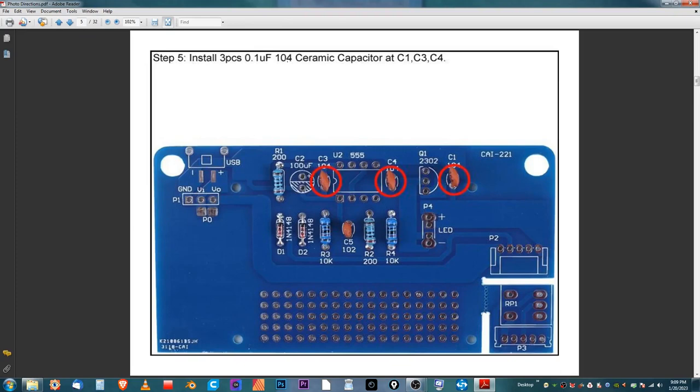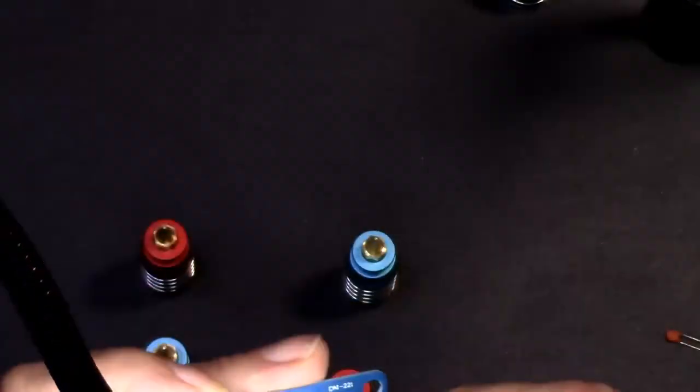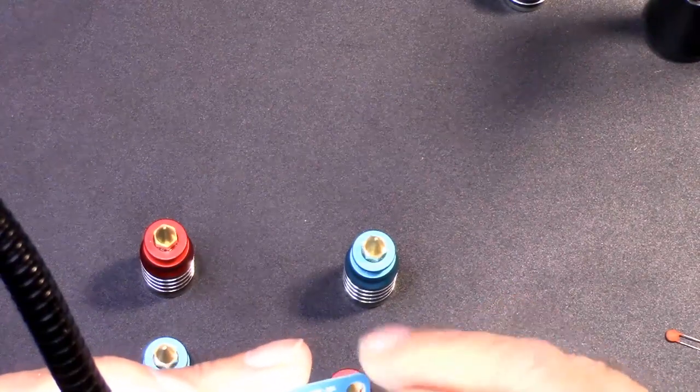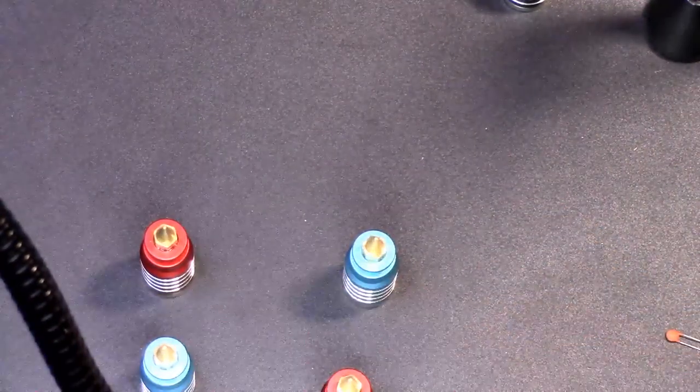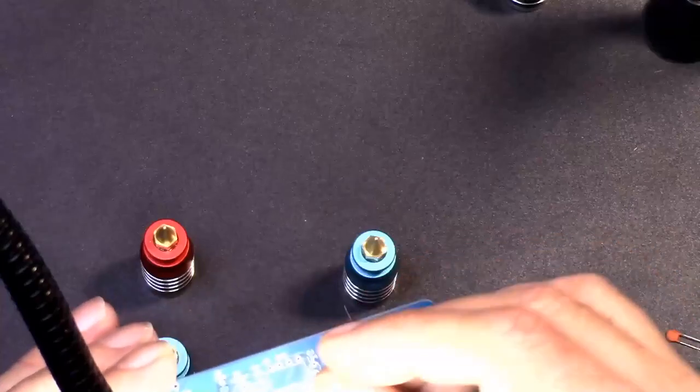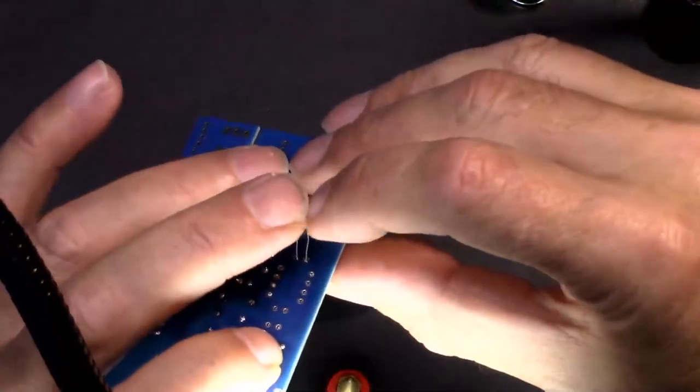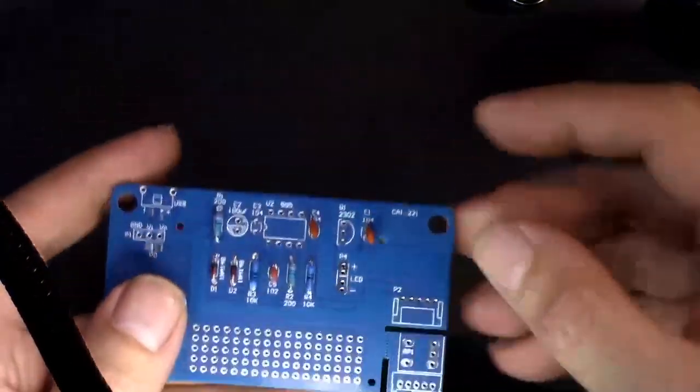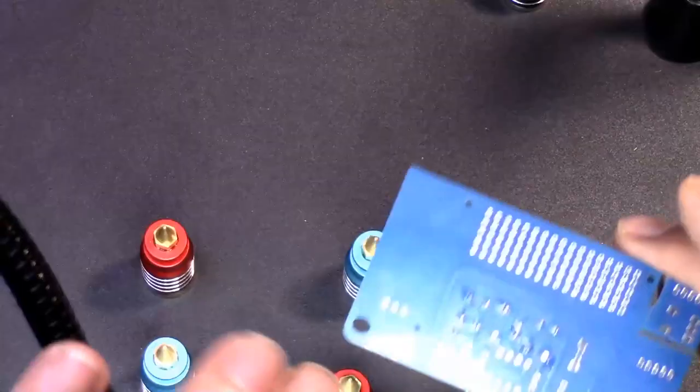Step number five: install three pieces 0.1 microfarad 104 ceramic capacitors. Three 104s at C1, C3, and C4. These are so little, so teeny. I learned that from bigclive.com - that's how he does it, bending these out. Then let's solder this together and clean the soldering iron tip, then cut these down. Not too bad for the first time in my life I've ever tried anything like this.